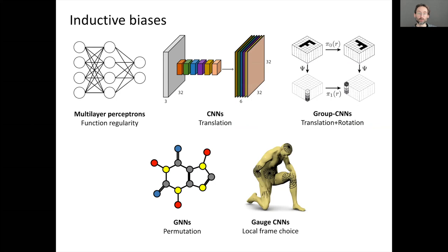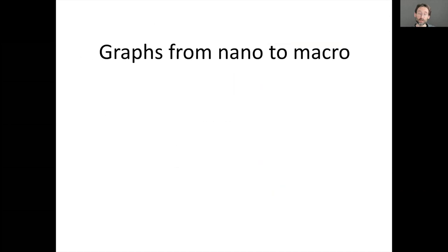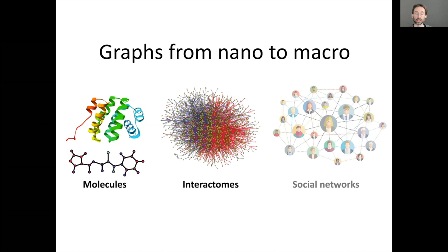This concept is not novel — it has been explored in many fields. Multi-layer perceptrons have weak inductive bias; CNNs come from translation symmetry; this can be generalized with group-equivariant CNNs for 3D rotations; graph neural networks have permutation equivariance; and gauge-equivariant CNNs handle local frame choices. I'd like to talk about graphs because they are truly universal models for systems of relations and interactions.